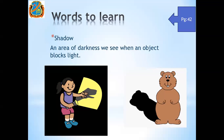As usual, we will look at the new words first. In this lesson, there is only one new word: shadow. Shadow is an area of darkness we see when an object blocks light.